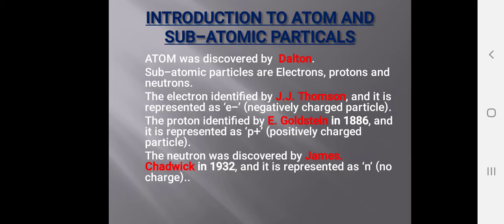The electrons were identified by J.J. Thomson and are represented by small 'e'. Electrons are negatively charged particles. Protons were identified by E. Goldstein in 1886, represented by 'P', and are positively charged particles. Neutrons were discovered by James Chadwick in 1932, represented by small 'n'. Neutrons do not have any charge, so they are neutral.